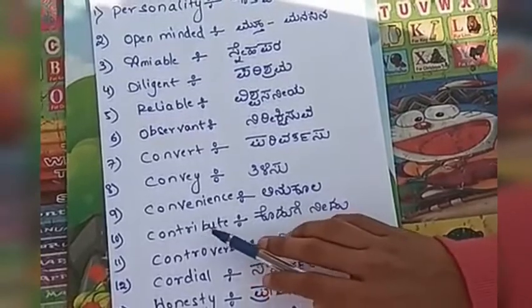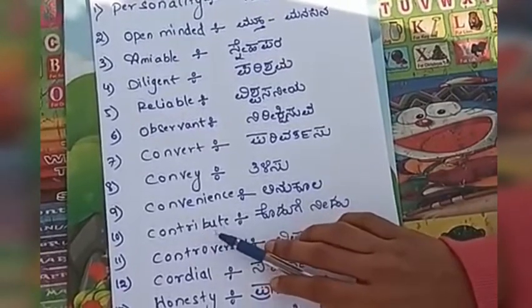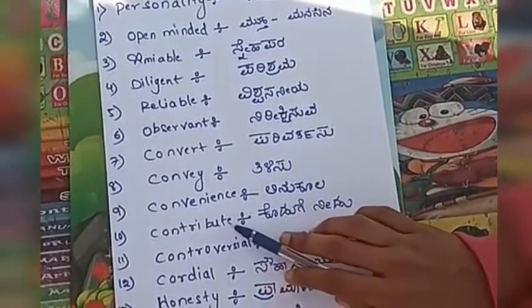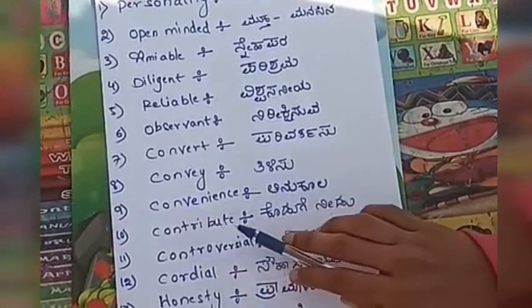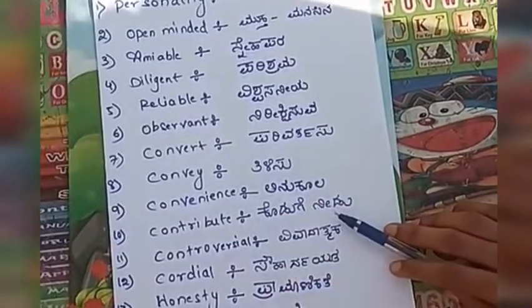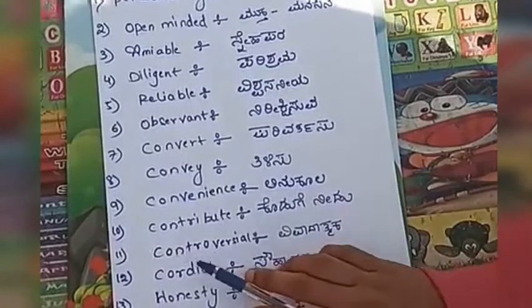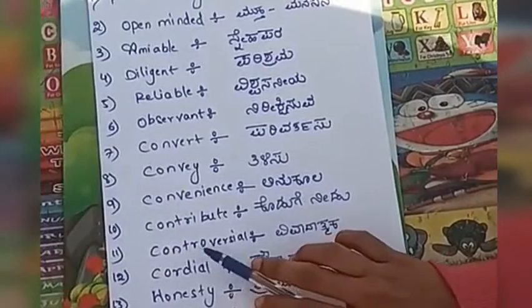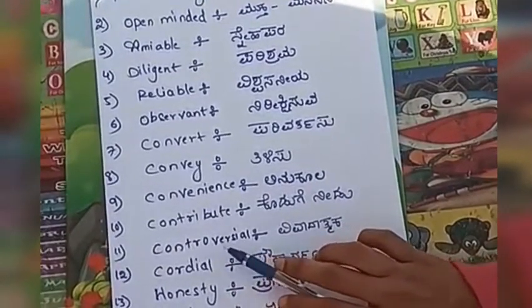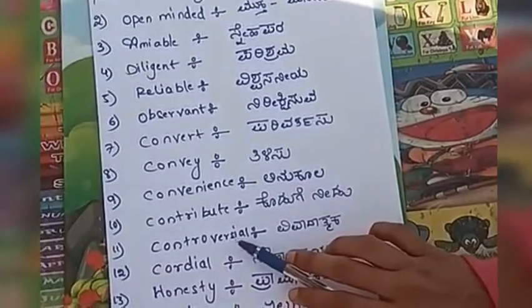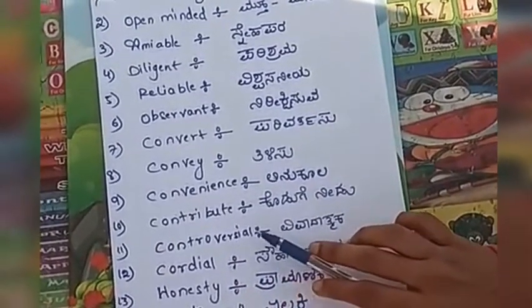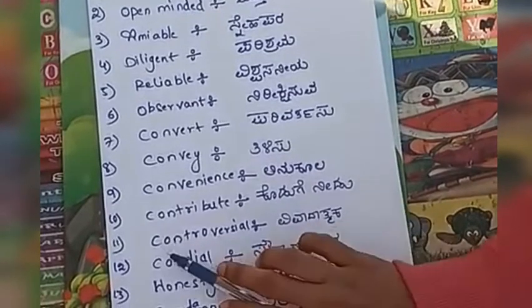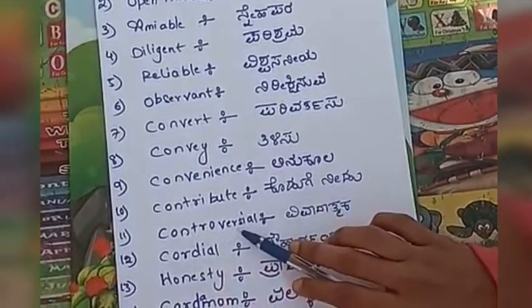Contribute, C-O-N-T-R-I-B-U-T-E, contribute — kodughe nidu. Controversial, C-O-N-T-R-O-V-E-R-S-I-A-L, controversial.